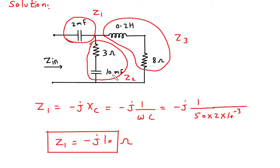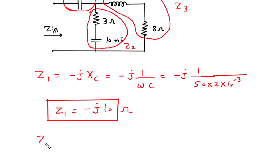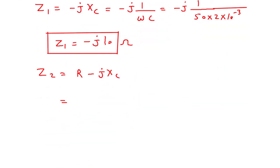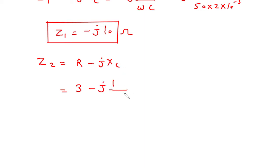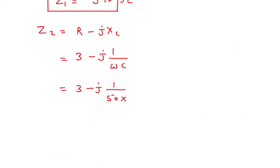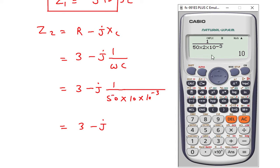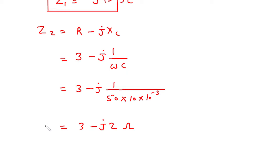Then Z2: Z2 is the series connection of a resistor and capacitor. So we can write Z2 = R − j·XC. The resistance is 3 ohms, and for XC = 1/(ω·C) with ω=50 and capacitance = 10 mF = 10×10⁻³. So Z2 = 3 − j2 ohms.